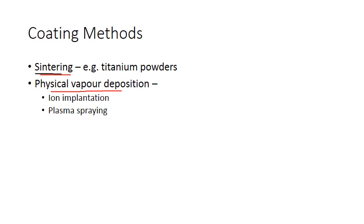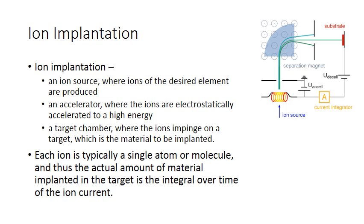Physical vapor deposition can be done by ion implantation or plasma spraying. In ion implantation, an ion source of metal ions is produced, which flows through a separation magnet and accelerates electrostatically — they're connected to a voltage supply, and an electrostatic force draws the ions to the substrate, where they bombard and embed into it. Each ion is typically a single atom or molecule, so the amount of material implanted is the integral over time of the ion current.